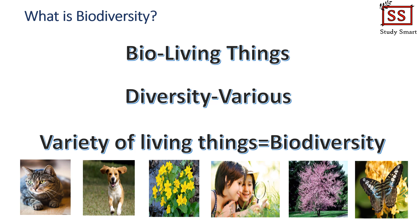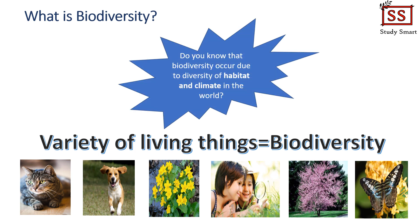This includes the diversity of the species itself, genetic diversity within the species, and the diversity of ecosystems. Do you know that biodiversity is only possible if there are different types of habitat and climate in the world? For example, penguins exist only because there is cold weather climate at certain parts of the world like Antarctica. Without the cold weather climate, it would not be possible for penguins to exist in the world.